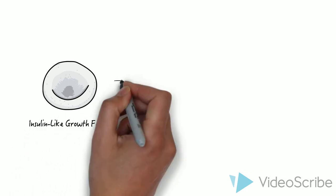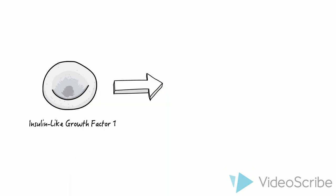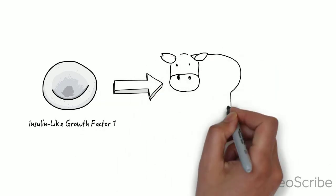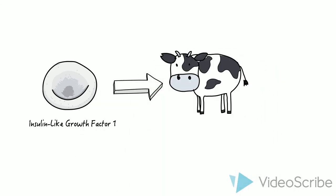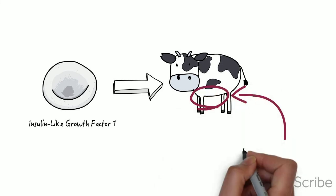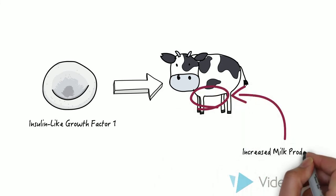This stimulates milk-producing organs in the cow and causes the cow to produce more milk. Because RBGH is not produced naturally, it causes the cow to produce more milk than it is normally capable of producing.